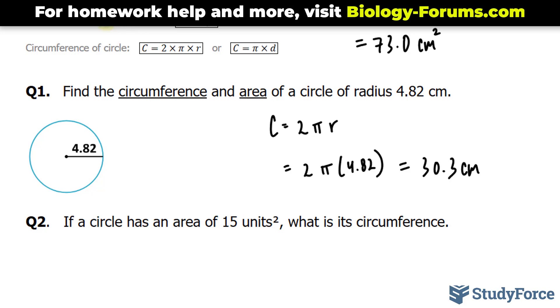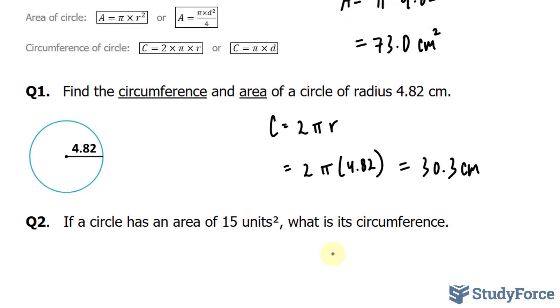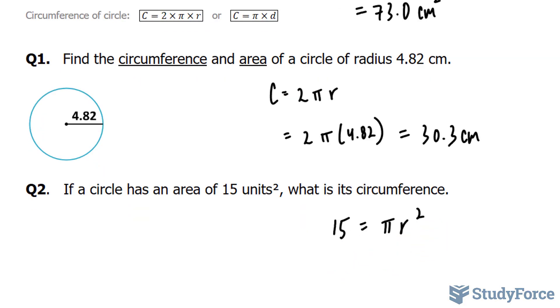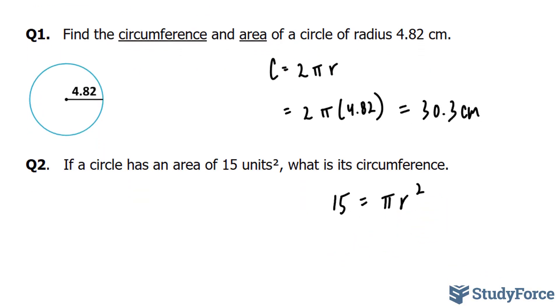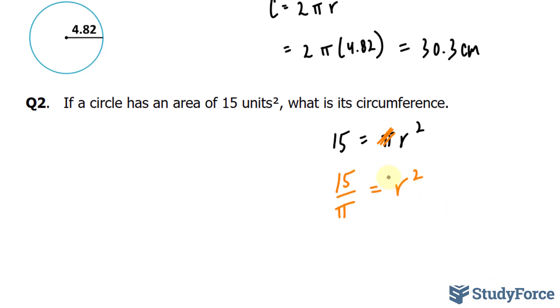First I'll take this 15 and replace it with that A. 15 is equal to pi r squared. And as I mentioned, I need to use a little bit of algebra. So to find out what r is, I'll divide both sides by this pi symbol. We have 15 divided by pi, and if I divide the right side by pi, the pi symbol will cancel out, leaving me with 15 over pi is equal to r squared. To find out what r is, given that it's being squared, I can reverse this square by square rooting both sides.